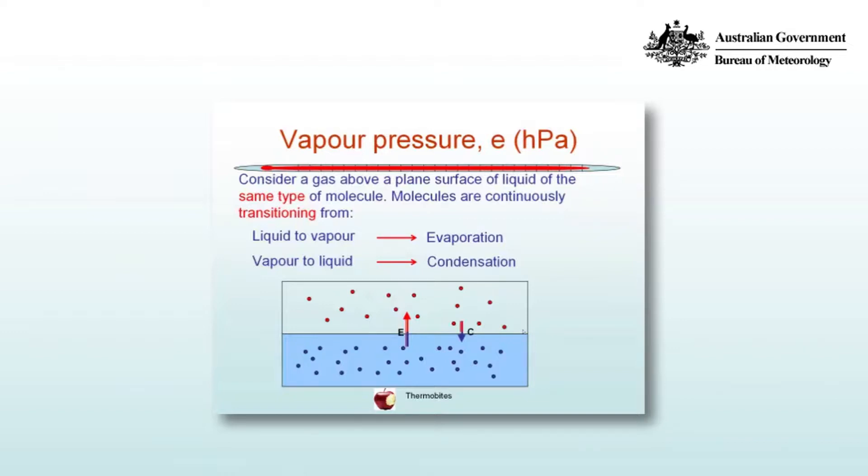Evaporation, unlike boiling, is only a surface process. Boiling occurs throughout the body of a liquid, whereas evaporation only occurs at the surface of the liquid water body.